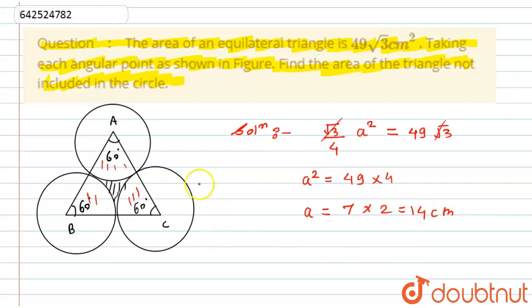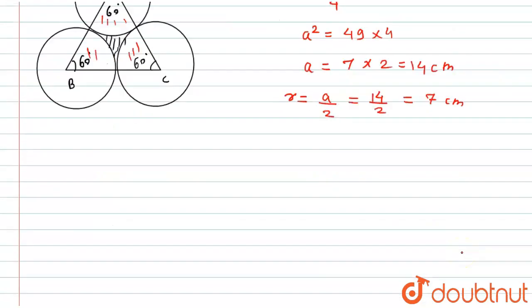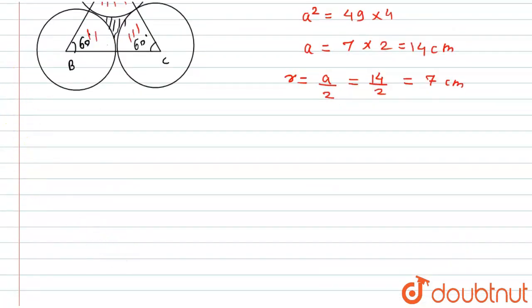As mentioned, the radius of each circle is half the side of the triangle. Therefore, r = a/2 = 14/2 = 7 cm.